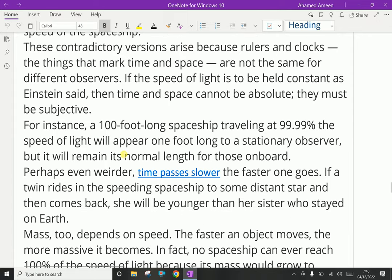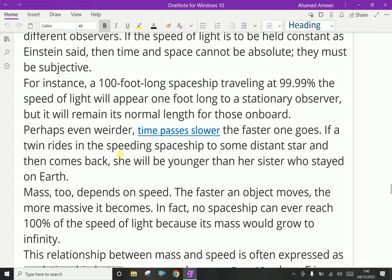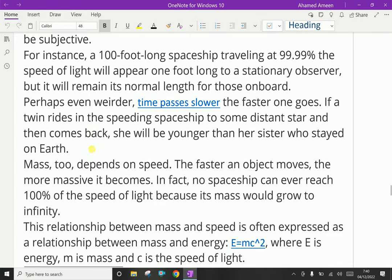For instance, a 100-foot-long spaceship traveling at 99.99 percent of the speed of light will appear one foot long to a stationary observer, but it will remain its normal length for those on board. Perhaps even weirder, time passes slower the faster one goes. If a twin rides in the speeding spaceship to some distant stars and then comes back, she will be younger than her sister who stayed on Earth.